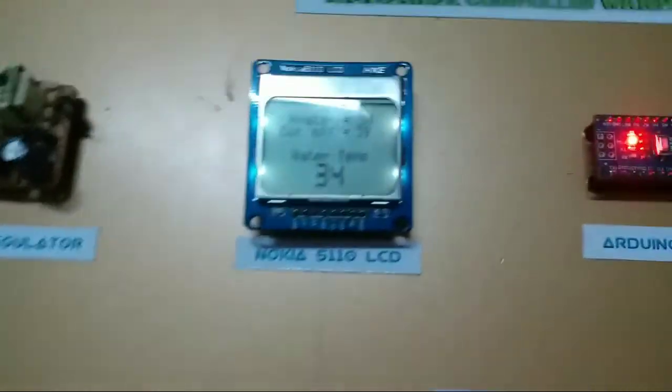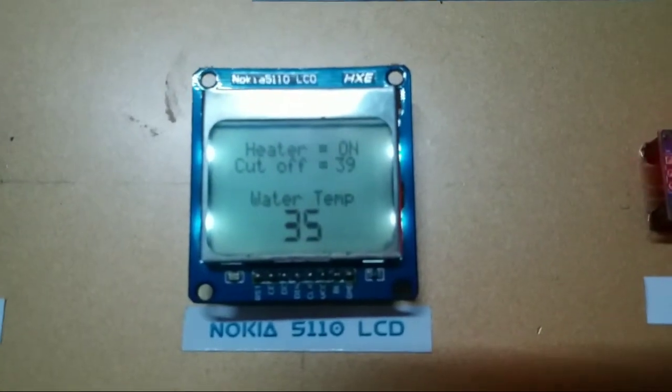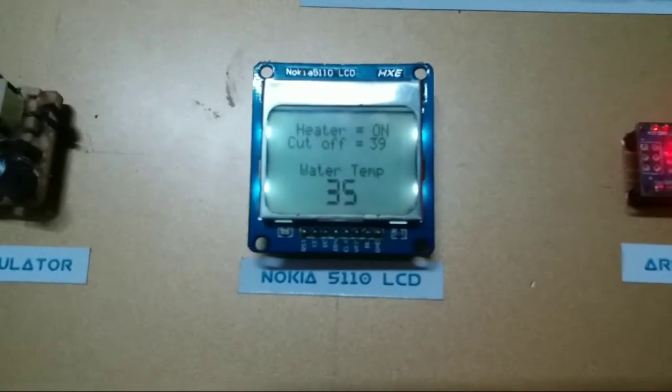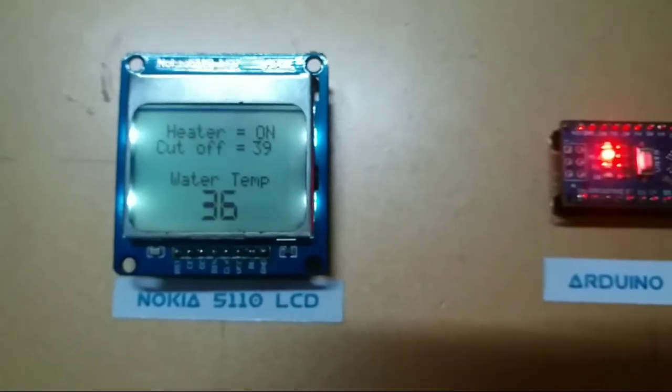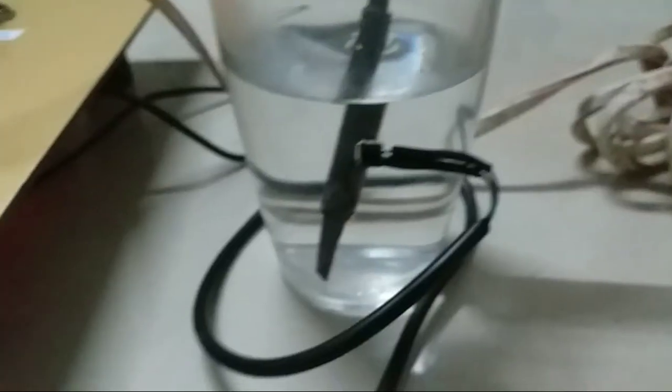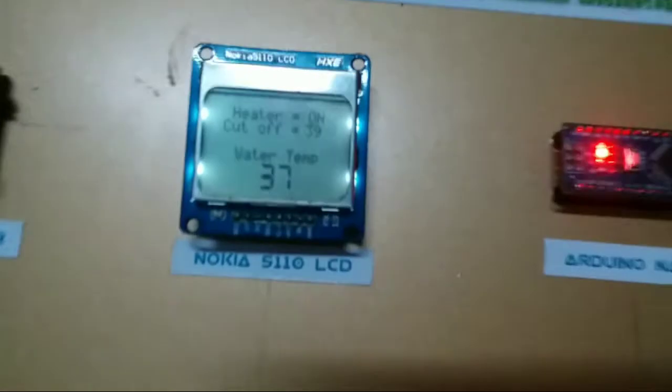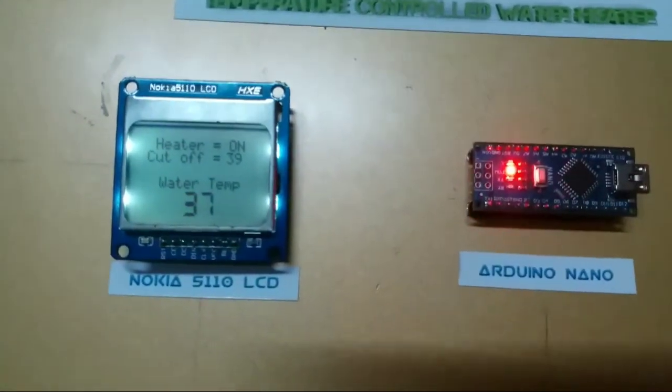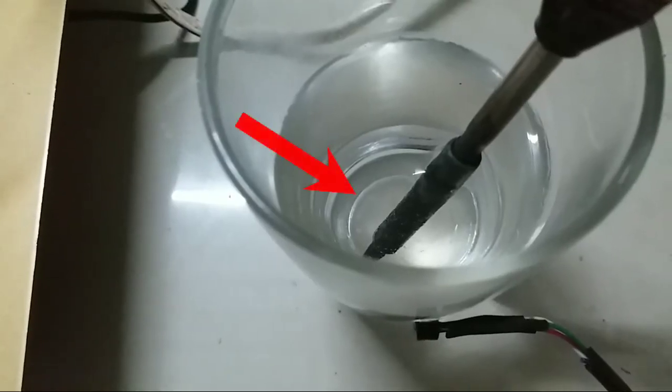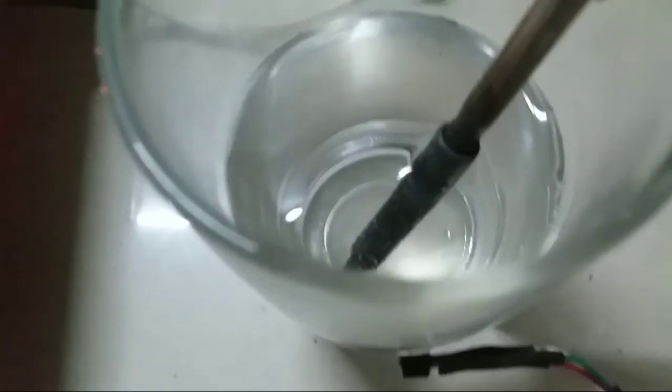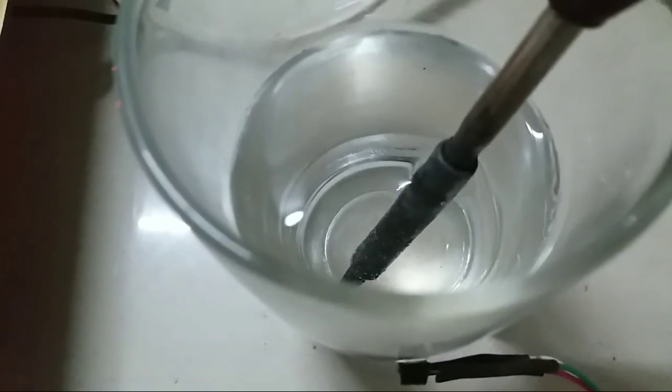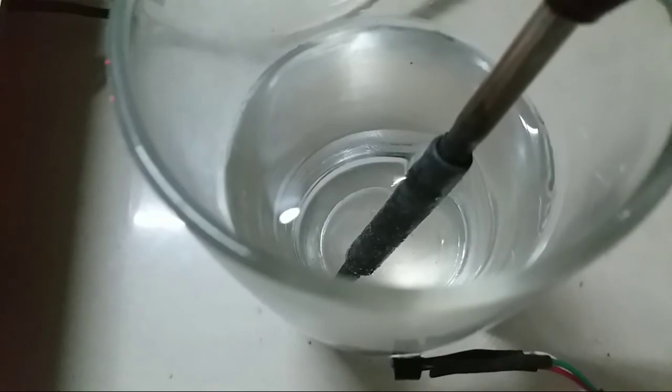Temperature is increasing with time, as showing on LCD screen. Temperature has reached 37 degree. Vapors are appearing across the iron surfaces. We can see it through glass. It indicates that our system is working properly.